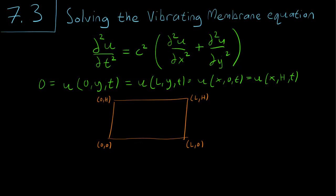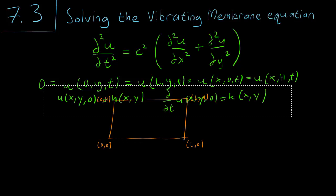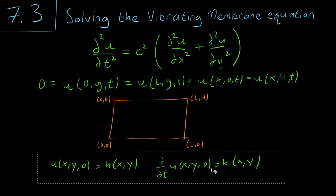The vibrating membrane equation tells us how a rectangular trampoline will behave given certain initial conditions. These are our initial conditions. Just like the vibrating string equation, we are going to need two initial conditions for both u and the derivative of u, because our equation involves a second derivative with respect to time.